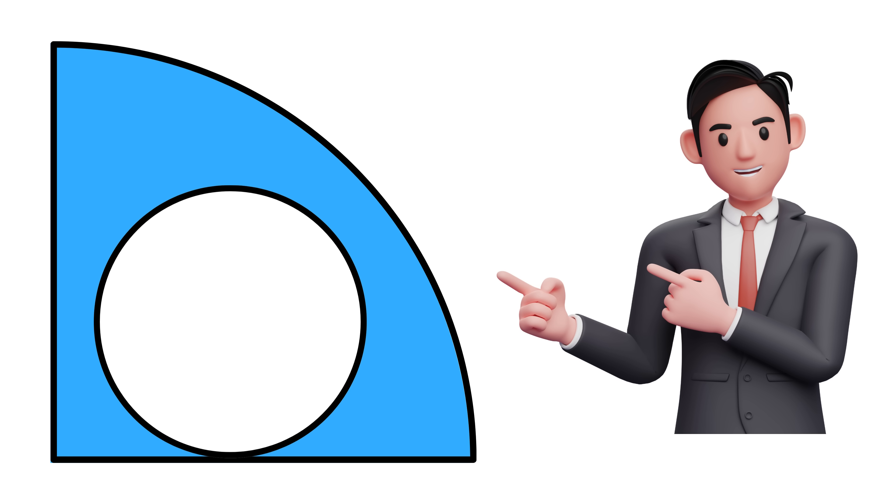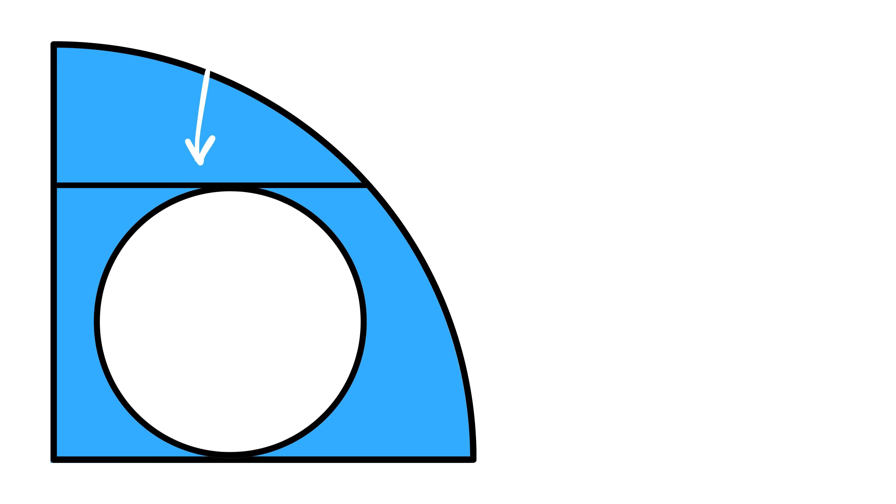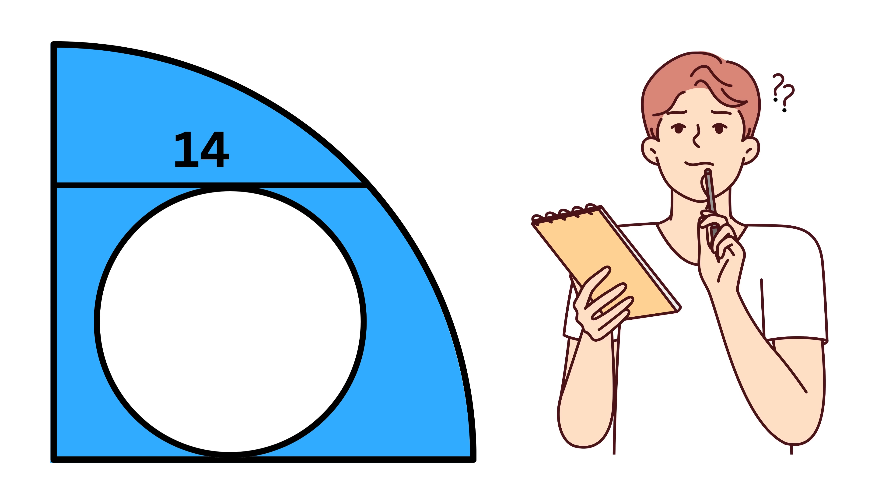And now comes the main thing: there is a straight horizontal line drawn from the curved edge of the quarter circle to this radius of the quarter circle such that this line just touches the full circle at this point. The length of this line is given to be 14 units.